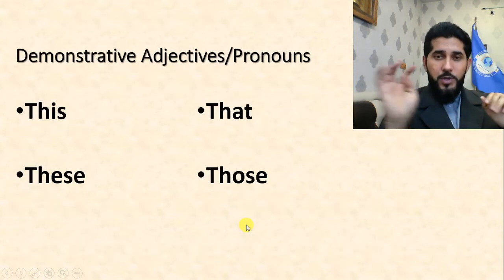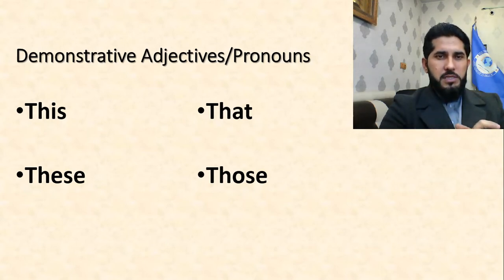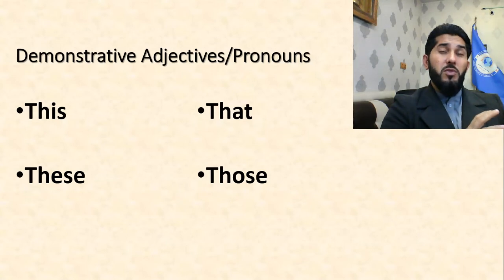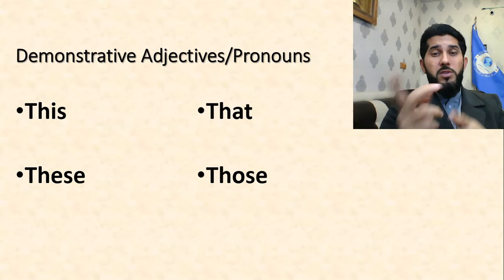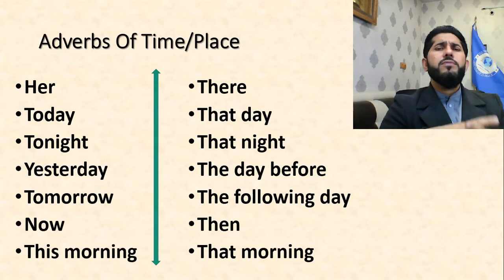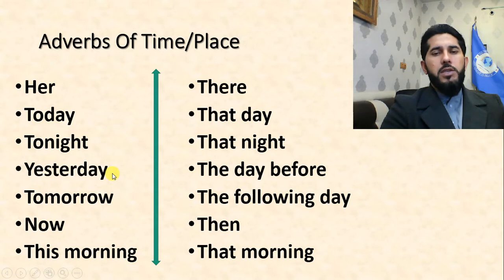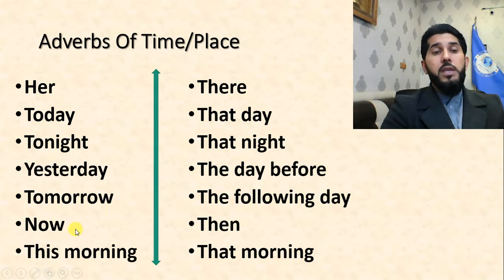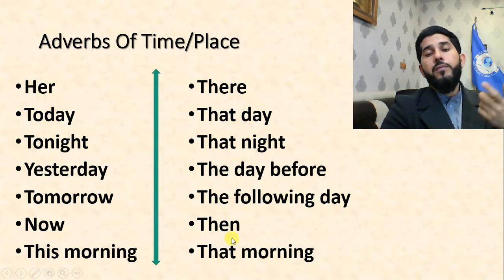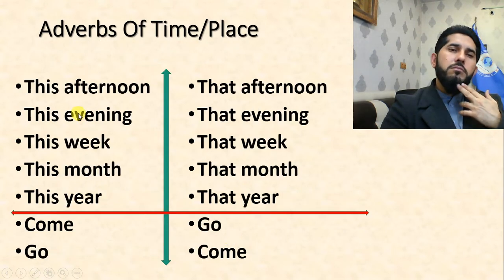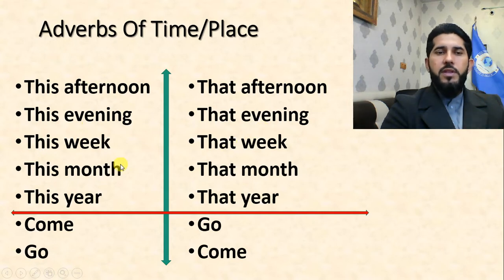There are some other changes to be brought. Demonstrative adjectives: 'this' should be changed to 'that,' and 'these' should be changed to 'those.' Adverbs of time and place also change: 'here' becomes 'there,' 'today' becomes 'that day,' 'tonight' becomes 'that night,' 'yesterday' becomes 'the day before' or 'the previous day,' 'tomorrow' becomes 'the following day,' 'now' becomes 'then.'